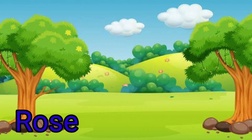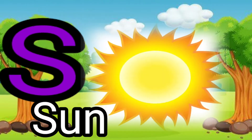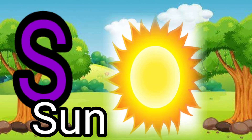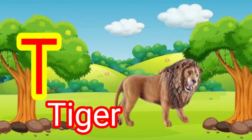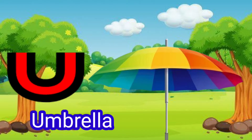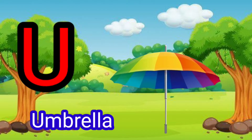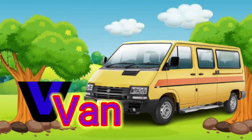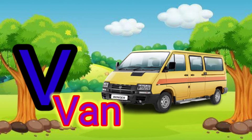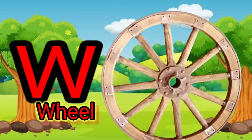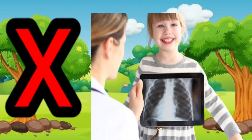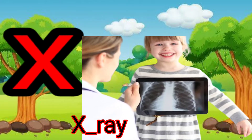R for rose, S for sun, T for tiger, U for umbrella, V for van, W for wheel.